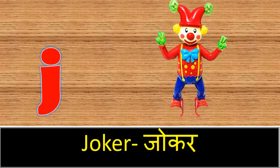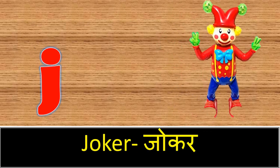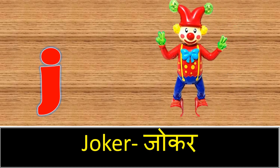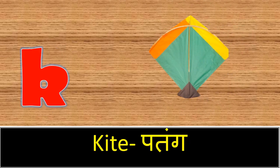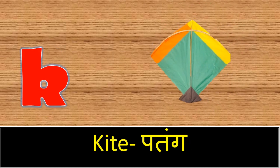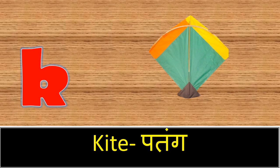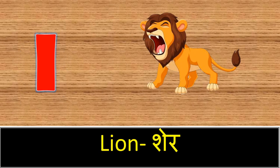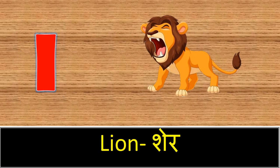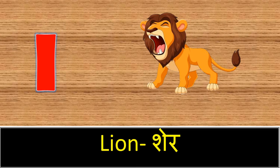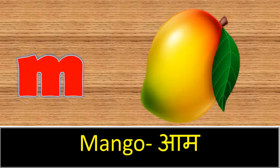J. J for joker. K. K for kite. Kite means patang. L. L for lion. Lion means share.